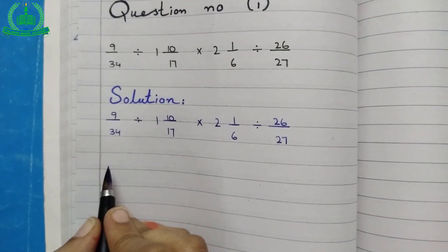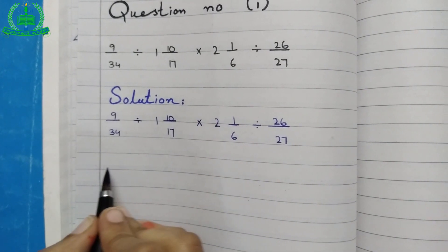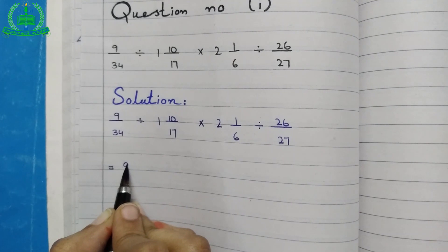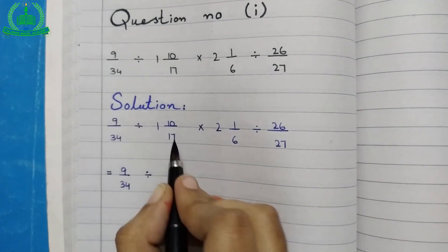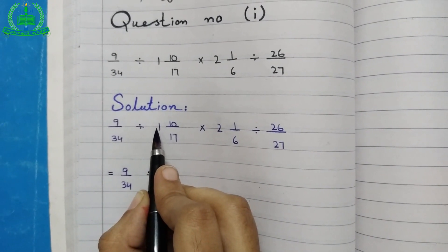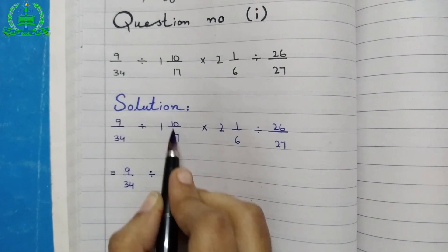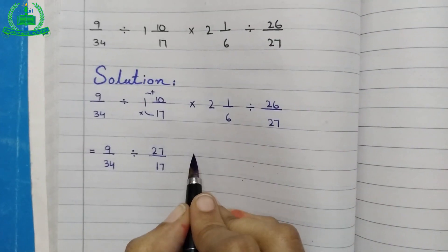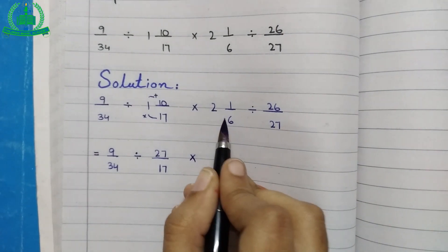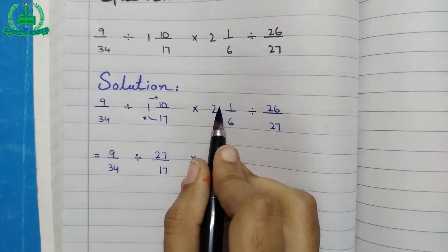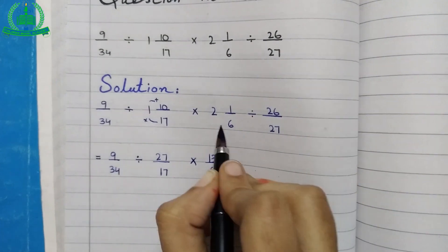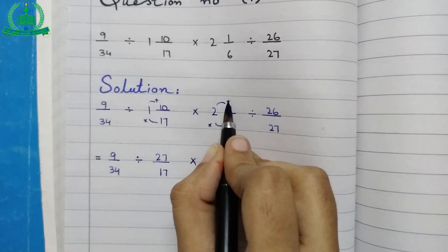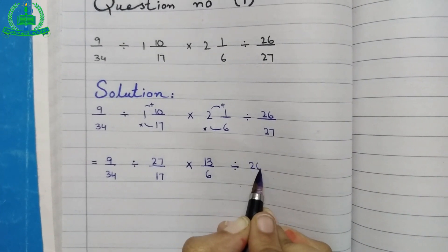First of all, change the whole numbers into improper fractions. 1 whole 10 upon 17 equals to 17 multiplied by 1 plus 10, which gives 27 upon 17. And 2 whole 1 upon 6 equals to 6 multiplied by 2 plus 1, which gives 13 upon 6. Divide 26 upon 27.